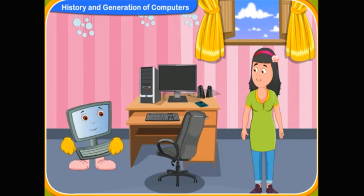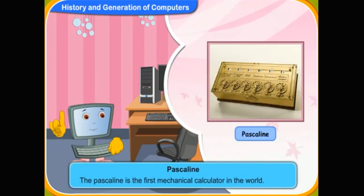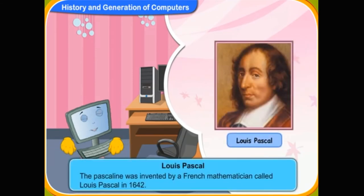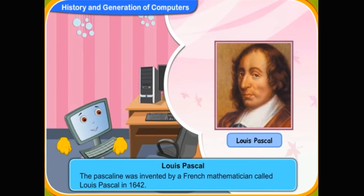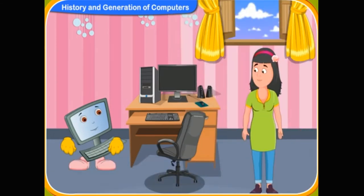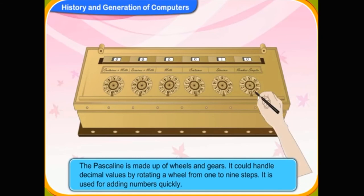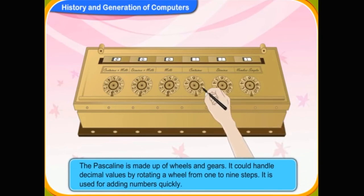The Pascaline is the first mechanical calculator in the world. It was invented by a French mathematician called Blaise Pascal in 1642, and so it is named after him. The device is made up of wheels and gears, and could handle decimal values by rotating a wheel from one to nine steps. It is used for adding numbers quickly. The meters used in taxis nowadays are an example of the Pascaline.